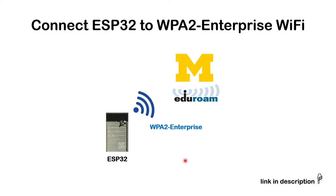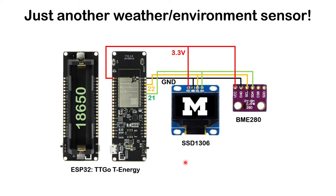The idea is to use this ESP32. What I got here was the TTGO T-Energy, which has an 18650 battery holder. So even if there's no power or I want this at a remote location, it can run on battery for a while. I connected a display using the I²C protocol and also a BME280 sensor — very inexpensive accessories, total cost less than 20 dollars.